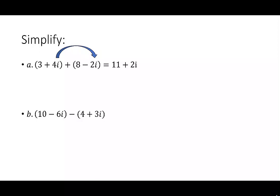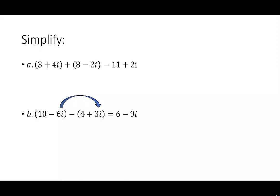Let's do the same thing with 10 minus 6i minus 4 plus 3i. To start, I'll look at the real parts, 10 and 4. Remember, there's a negative sign in between, so I'm finding 10 minus 4, which is a positive 6. Then I'll move over to the imaginary parts of negative 6i minus 3i. I want you to think negative 6 minus 3, which gives me a negative 9i.